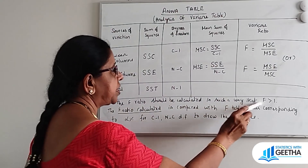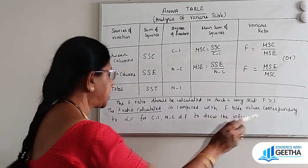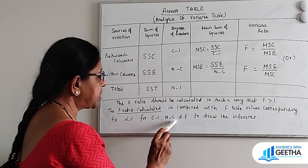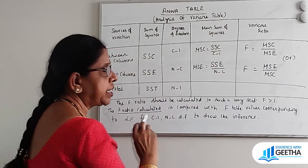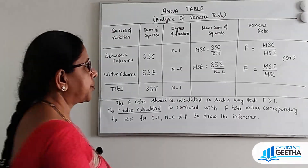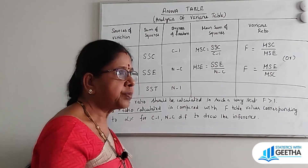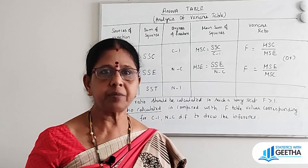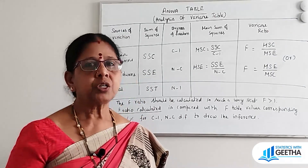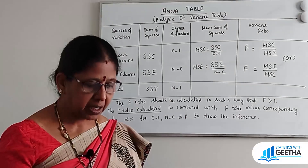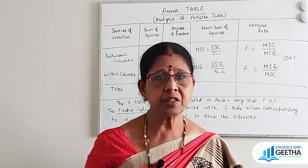The F ratio should be calculated such that F is greater than 1. The calculated F ratio is then compared with the F table value corresponding to alpha percent for (C−1, N−C) degrees of freedom to draw the inference. If the calculated value is less than or equal to the table value, there is no evidence to reject H₀, so we accept H₀.